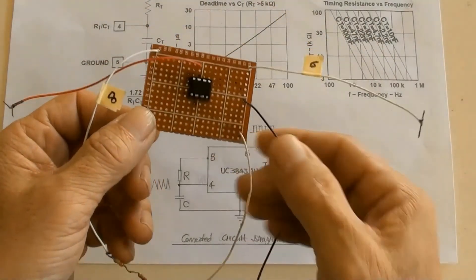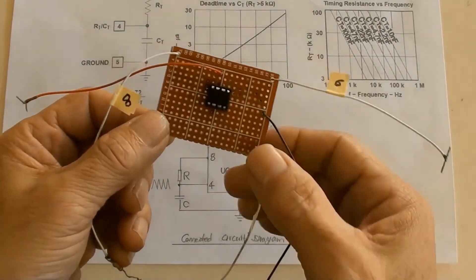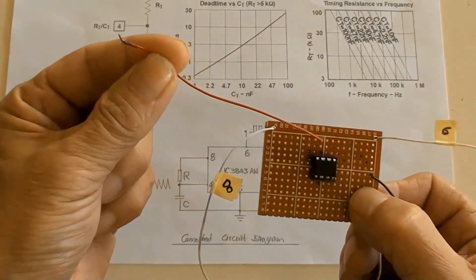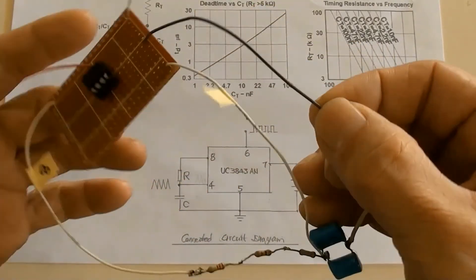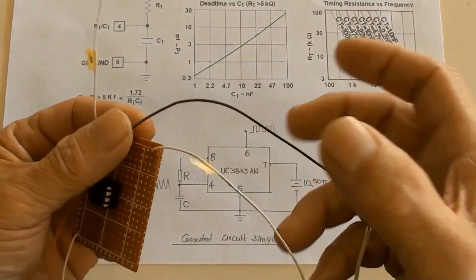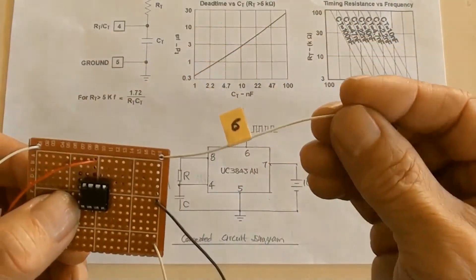This is an oscillator by using a UC3843AN as the diagram showed. Red wire is Terminal 7 for VCC. And black wire is Terminal 5 for ground. Number 6 is output terminal.